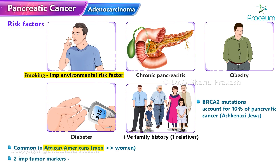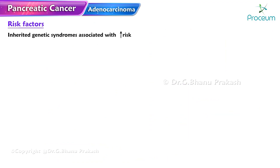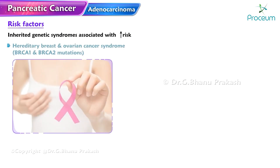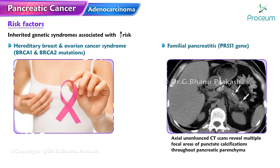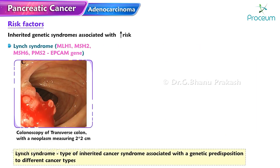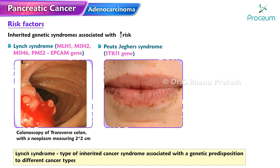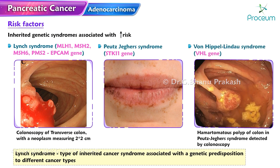Two important tumor markers commonly associated with pancreatic cancer are CA 19-9 (more specific) and carcinoembryonic antigen. Inherited genetic syndromes associated with increased risk include hereditary breast and ovarian cancer syndrome (BRCA1 and BRCA2 mutations), familial pancreatitis (PRSS1 gene), Lynch syndrome (MLH1, MSH2, MSH6, PMS2, or EPCAM gene), Peutz-Jeghers syndrome (STK11 gene), and von Hippel-Lindau syndrome (VHL gene).